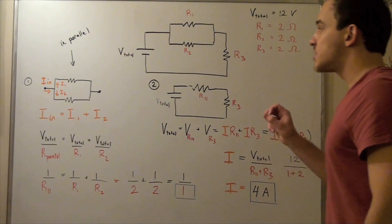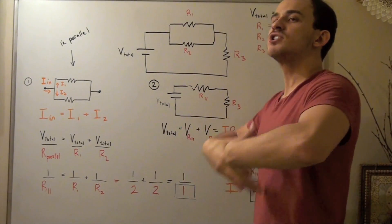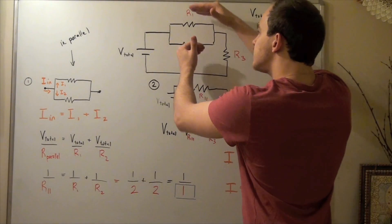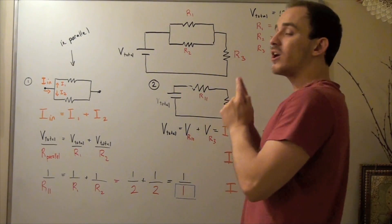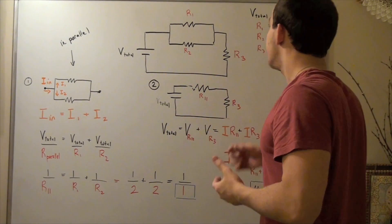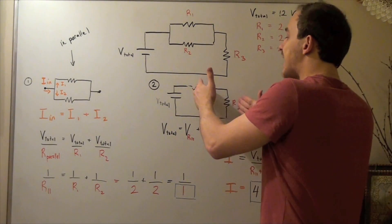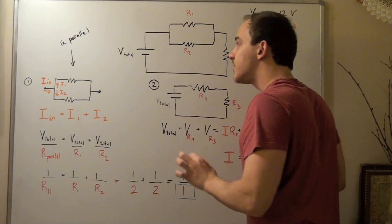What we did is we combined this first to find the total resistance due to the parallel resistors, and then we found these two which were in series. We simply combined their resistance and divided 12 volts by that total resistance, and we found our current that leaves this cathode.